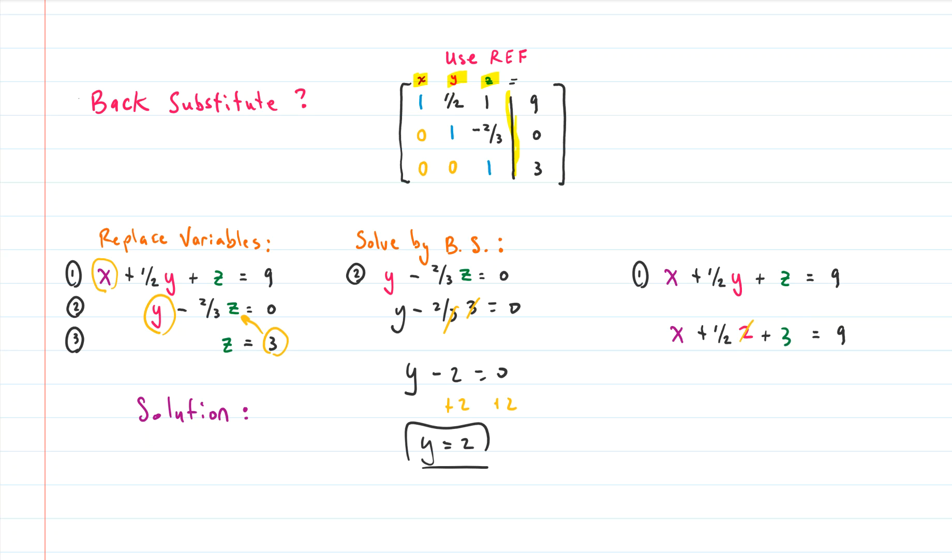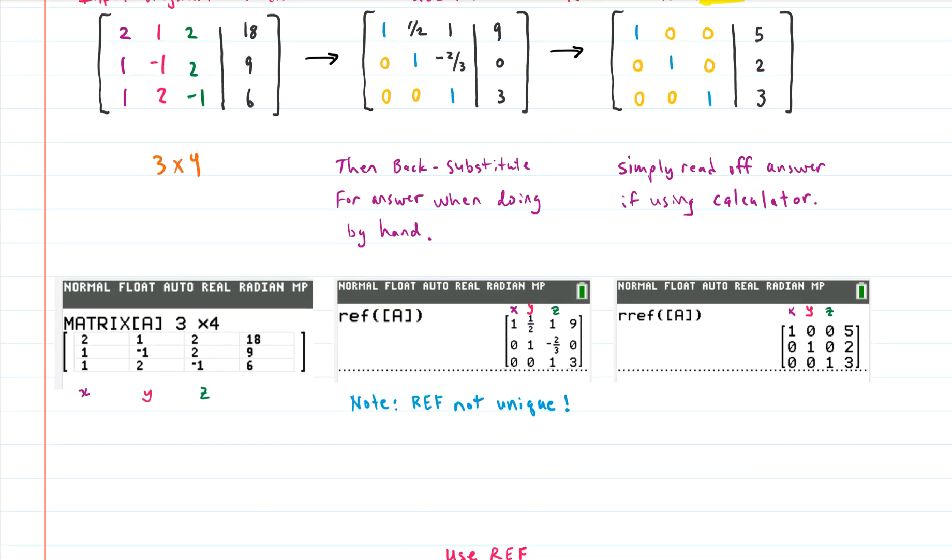And then I can solve for X. So the twos cancel, what do we have now? X plus one plus three equals nine, oh that was a slip, one plus three is four, X plus four equals nine. If we subtract four from both sides we get X equals five. So our solution then by using the row echelon form and then back substitution is five and two and three. So that's great that it's faster than doing everything by hand.